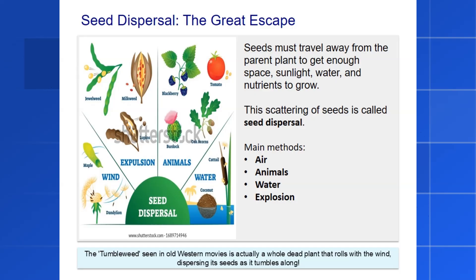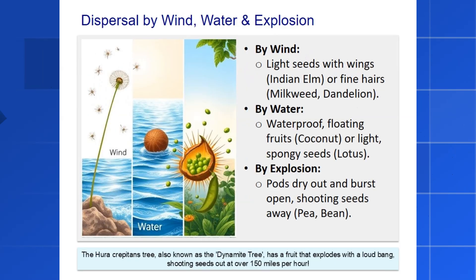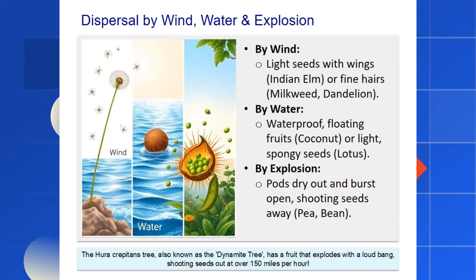You know those tumbleweeds you see rolling across the desert in movies? That's actually a form of seed dispersal. The entire plant breaks off from its root and tumbles with the wind, dropping its seeds all over the landscape. Let's look at some of these dispersal methods. For wind dispersal, seeds are often very small and light, or they have special features to help them fly. Think of the fluffy white hairs on a dandelion seed that act like a parachute, or the wing-like structures on a maple or elm seed that make them spin and glide through the air. For plants that live in or near water, the seeds or fruits are often buoyant and waterproof. The classic example is the coconut, whose thick fibrous husk allows it to float for months across oceans to find a new shore.